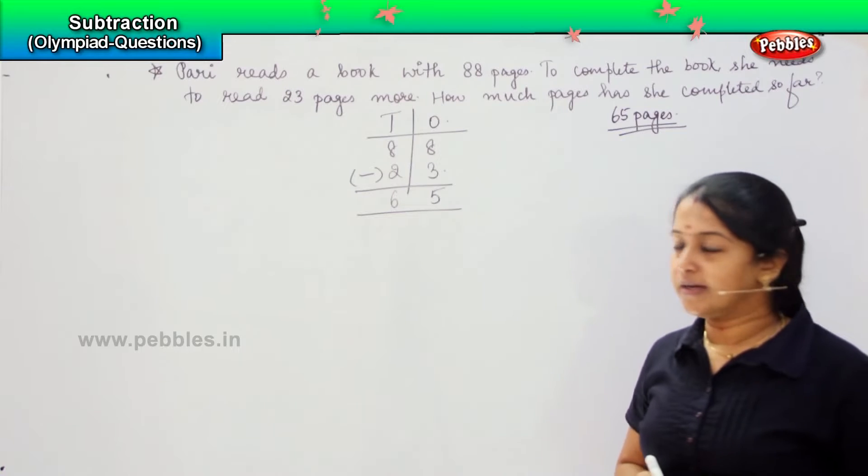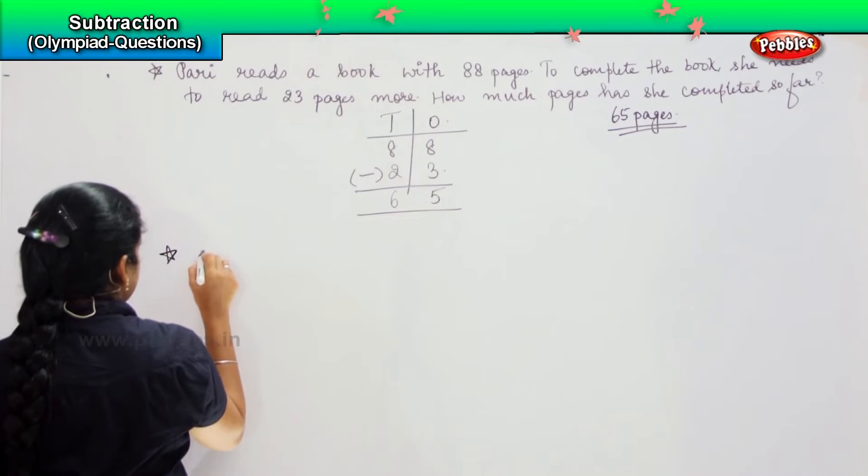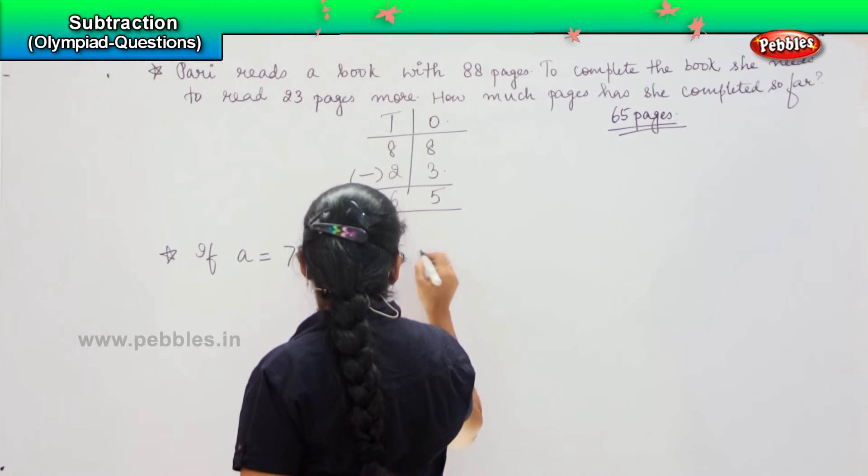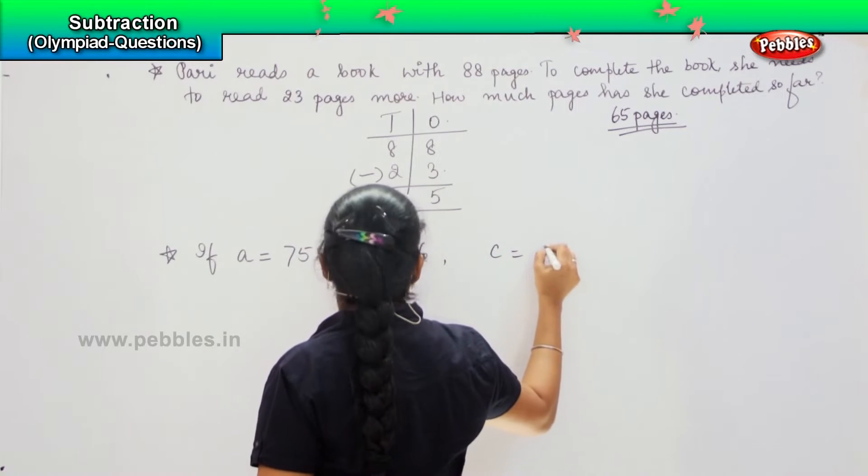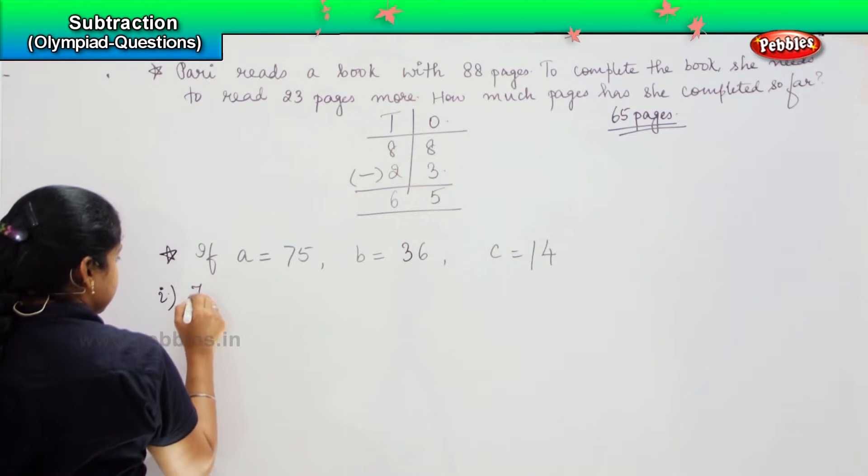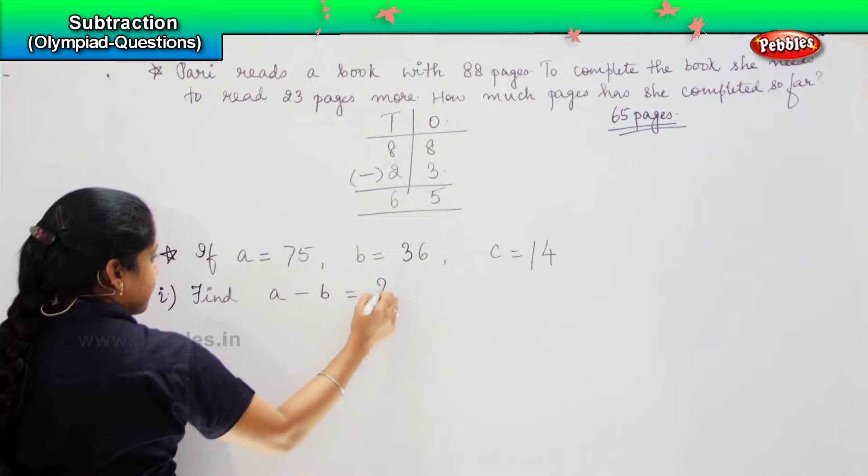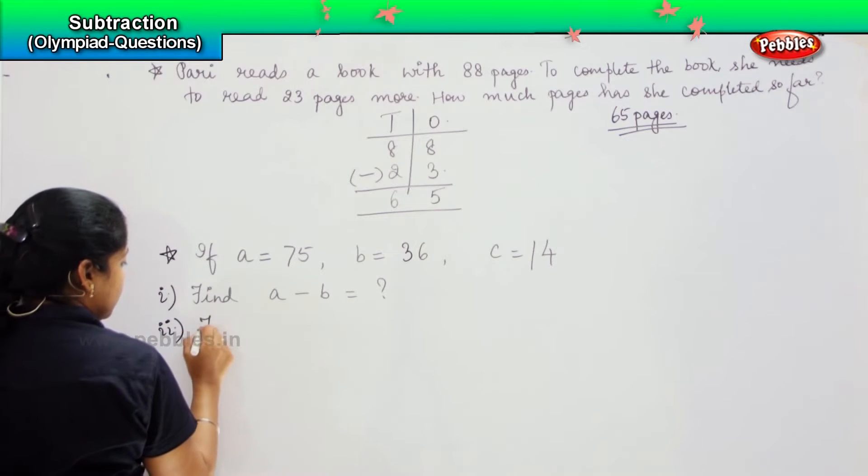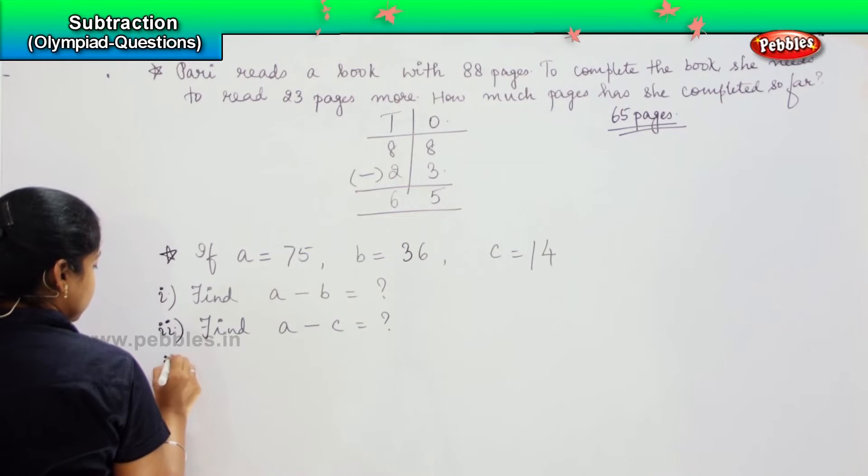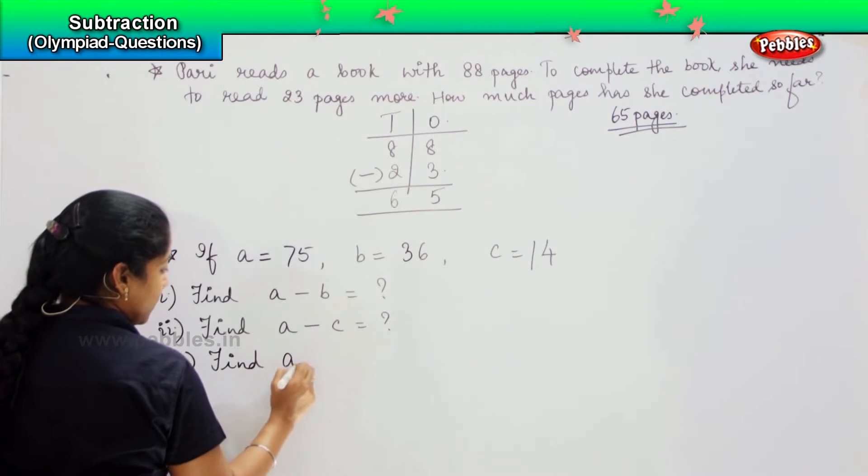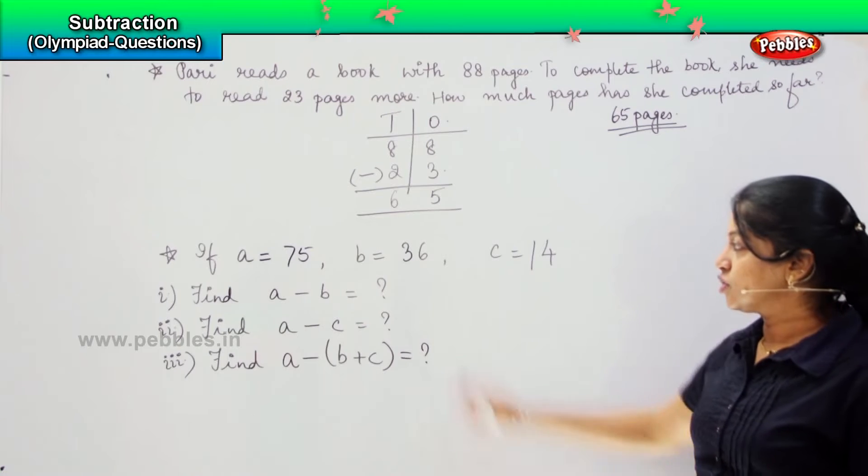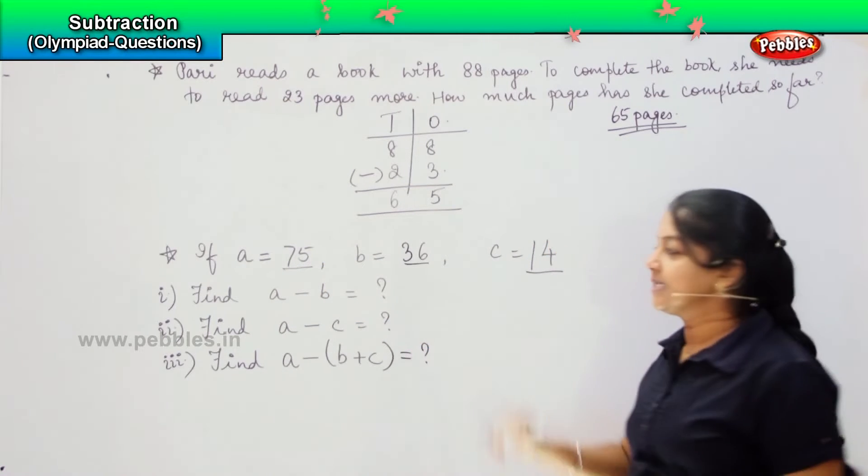Is it clear? The next question here is, if A equals to 75, B equals to 36, C equals to 14. You need to find A minus B, then you need to find A minus C, and then the last one is you need to find A minus B plus C.